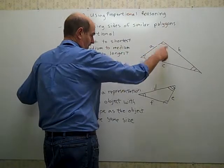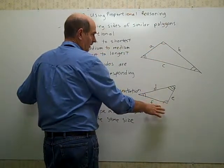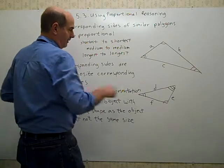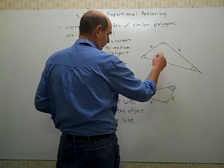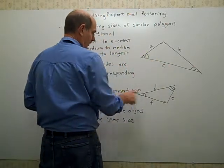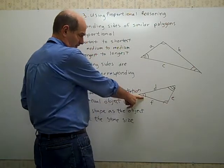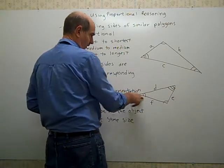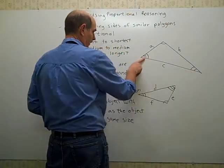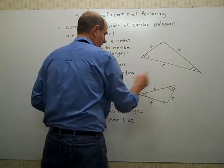This angle is the same size as this angle, because it has one arc going through it. And this would be the smallest. This is the most acute angle of this triangle. It matches this one. And then the three arcs going through means these two angles match up.